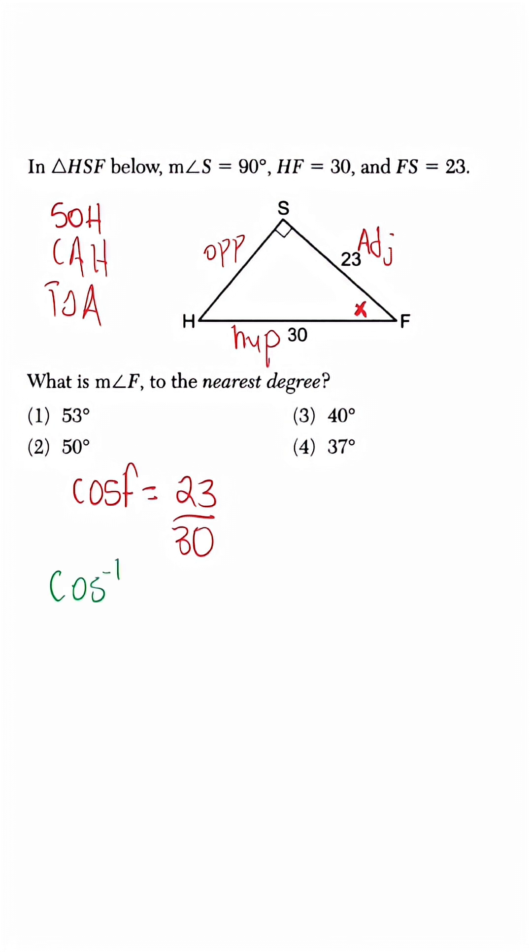So once we use the inverse function, we're going to notice that on the left-hand side, cosine is going to cancel out with itself, and we're going to be left with F. And then on the other side, what we're going to do is take the inverse of this function and then multiply it by our ratio.